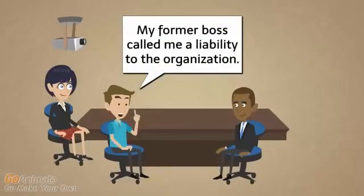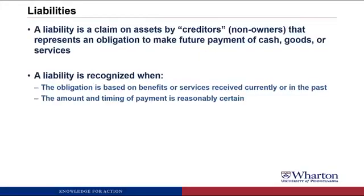Just like assets, there are two criteria for when we recognize a liability. First, the obligation is based on benefits or services received currently or in the past. And second, the amount and timing of the payment is reasonably certain. The first criteria requires some kind of transaction or exchange where you've received something that creates an obligation. The second criteria says you can measure the amount of that obligation. For example, if we borrow money from a bank, we have an obligation to repay based on receiving the benefit of the money, and the amount and timing are reasonably certain — so it would be a liability called notes payable or mortgage payable.